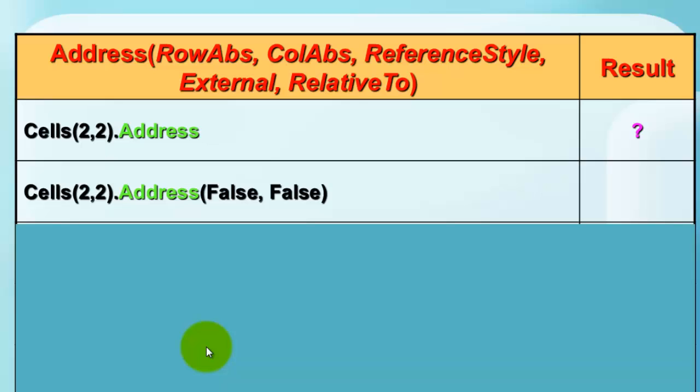You need to know one more thing. The property address of a cell or a range gives you options to say do you want an absolute row reference or an absolute column reference. Cells 2,2, that is the cell in row 2, column 2, the address is of course B2.